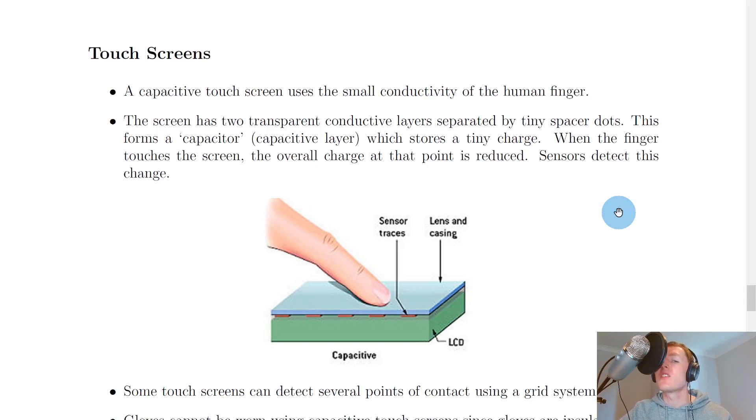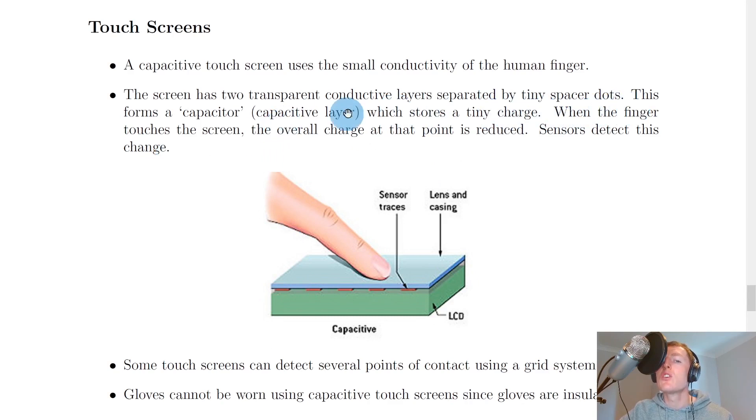Our last application is touchscreens, which I'm sure everyone watching this video has benefited from. A capacitive touch screen uses the small conductivity of the human finger. The screen has two transparent conductive layers separated by tiny spacer dots. This forms a capacitor which stores a tiny charge. When the finger touches the screen, the overall charge at that point is reduced, and sensors then detect this change.